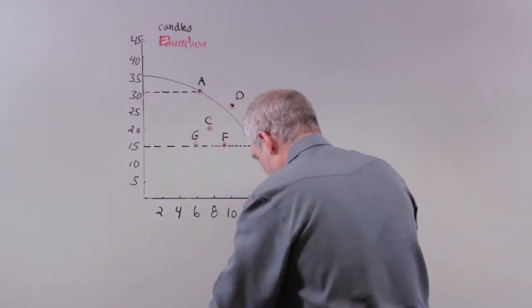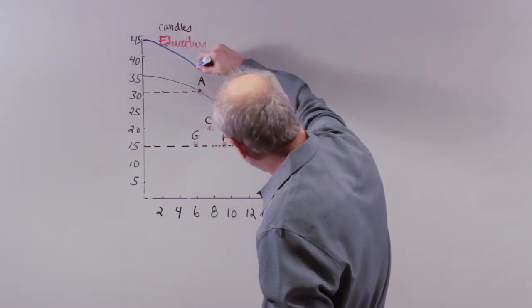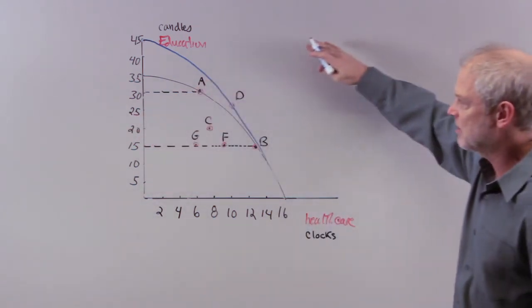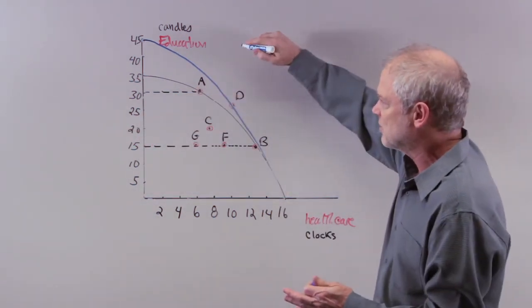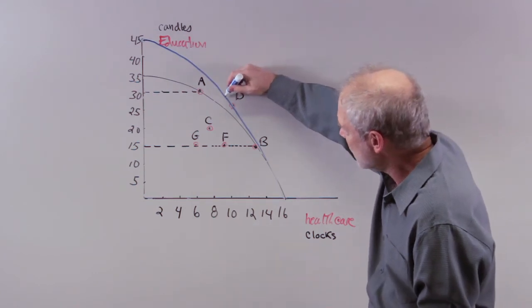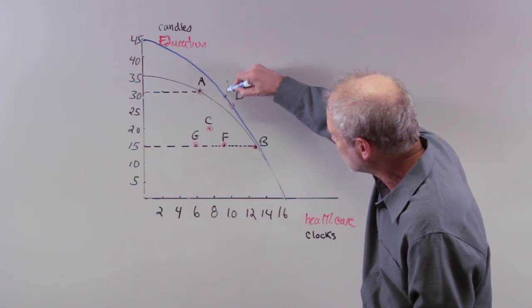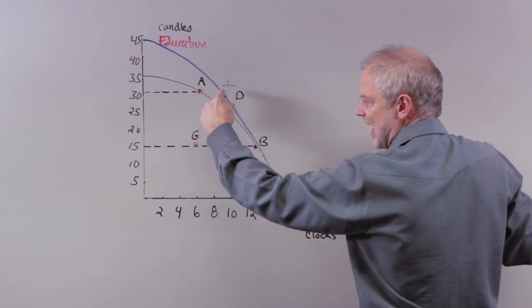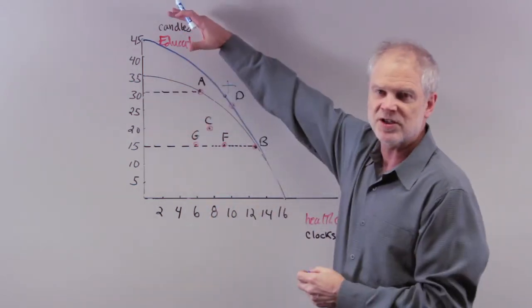So for example, let's say we could make candles really efficiently. And I could push the production possibility frontier out like that. In other words, just by using my resources more effectively, I could now get more education and more candles. Let's say I went to point, we'll call this point X, for example. At point X, I've got more candles and I have more clocks. The reason I got there is because we increase in productivity.